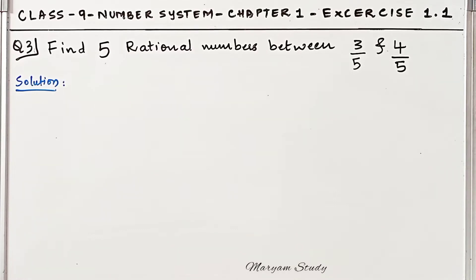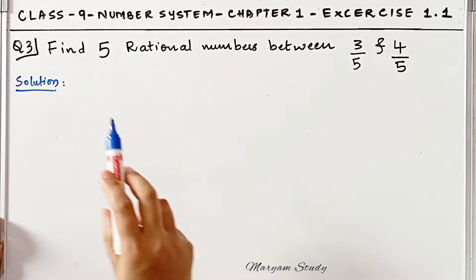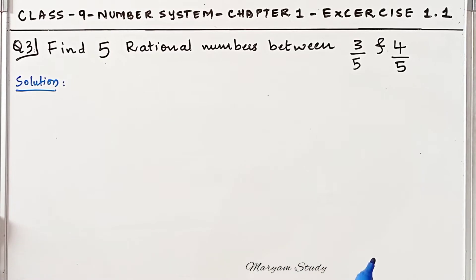Hello students, in this video we will solve Class 9, Question 3 of Exercise 1.1, Number System. The question is: find 5 rational numbers between 3/5 and 4/5.